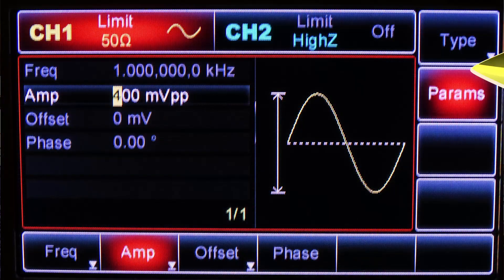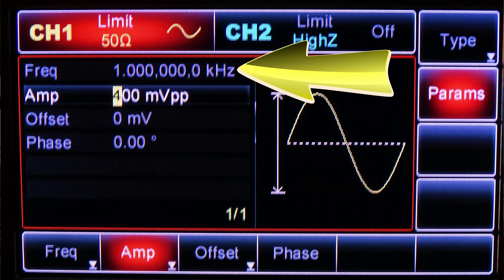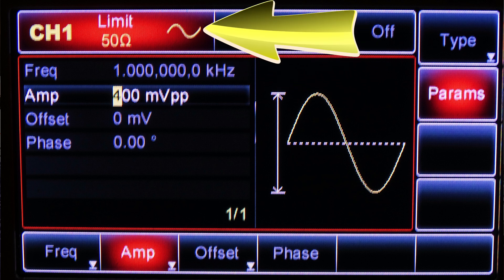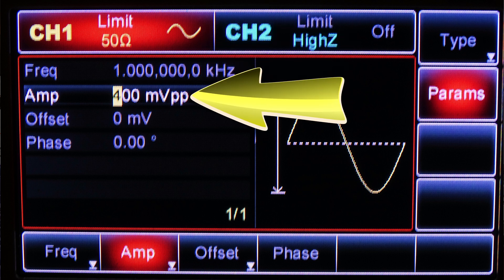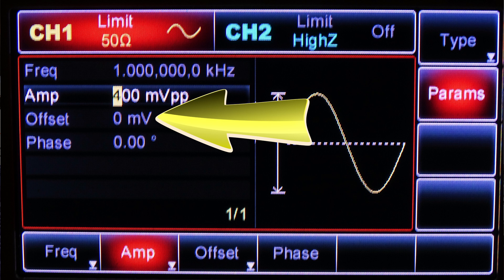Looking at the signal generator, the frequency is set to 1 kHz because this is kind of a standard frequency for audio devices. The output waveform is a sine wave. The output voltage is set to 400 millivolts peak-to-peak centered around 0 volts.